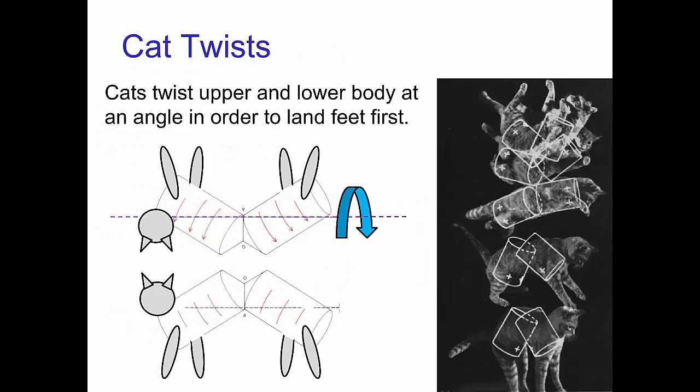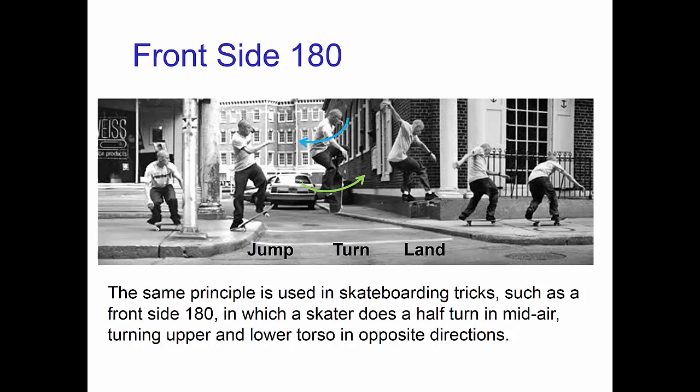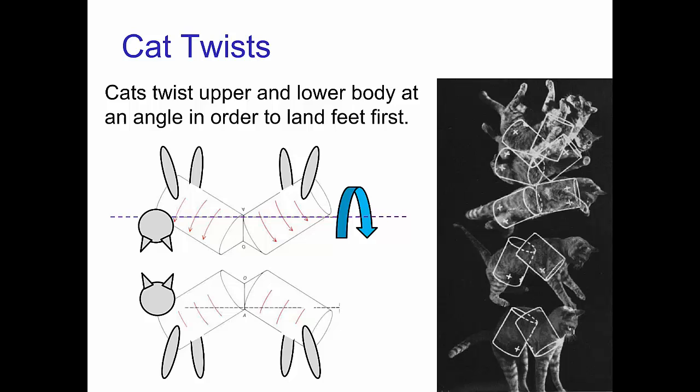Finally, cats are famous for being able to twist their bodies so as to land on their feet. In this case the cat rotates the upper and lower body in the same direction but at an angle, as shown in this diagram. This twisting motion results in turning the entire body by 180 degrees.